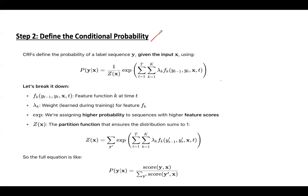Step two is to define the conditional probability. The notation defines P(Y|X), the conditional probability of the label sequence Y given input X. The feature function f_k(y_{t-1}, y_t, X, t) captures some property of the transition from the previous tag y_{t-1} to the current tag y_t at position t given the input sequence X. For example: is the current word capitalized? Is the previous tag a noun? λ_k is the weight for each feature, learned during training.